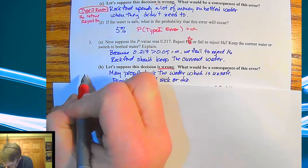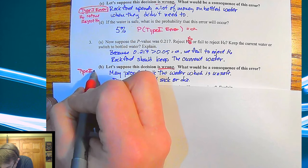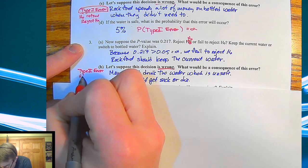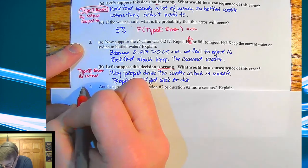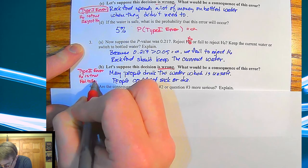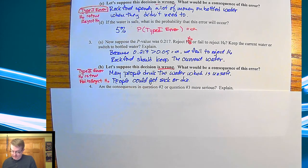This is called a type 2 error. So that means that your alternative hypothesis is true, and we fail to reject our null hypothesis.